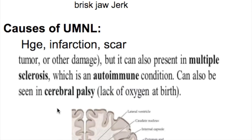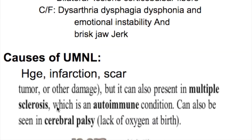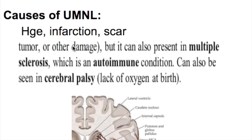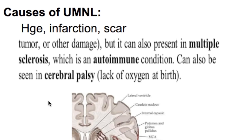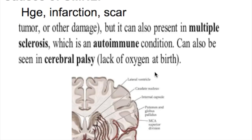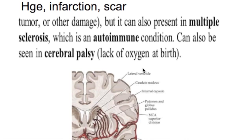Causes of upper motor neuron lesions may include hemorrhage, infarction, a scar, tumor, or damage from diseases such as multiple sclerosis — a demyelinating disorder — or cerebral palsy, which is due to anoxia at birth.